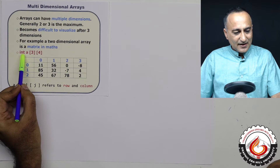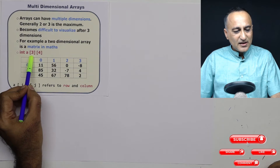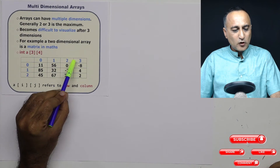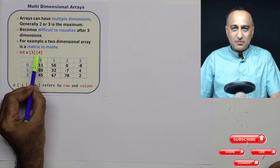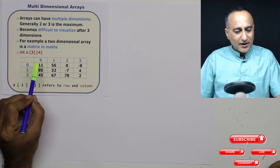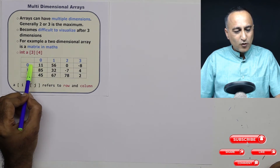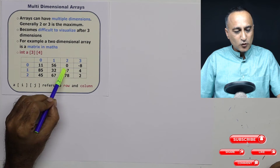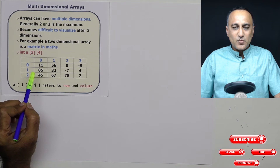Suppose I declare a two-dimensional array with the name 'a' holding integer data, declared as a[3][4]. Three represents the number of rows and four represents the number of columns. The first square bracket represents the rows, the second square bracket represents the number of columns. So if I have to refer to an element like 11, I will say a[0][0] — first the row, then the column. Zero refers to the zero-th row and zero refers to the zero-th column.